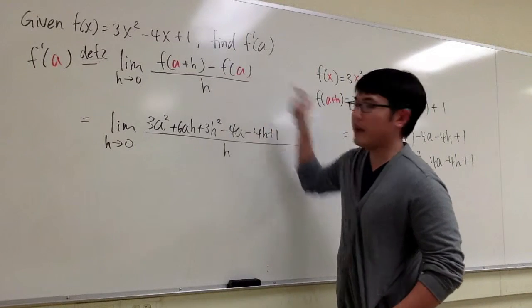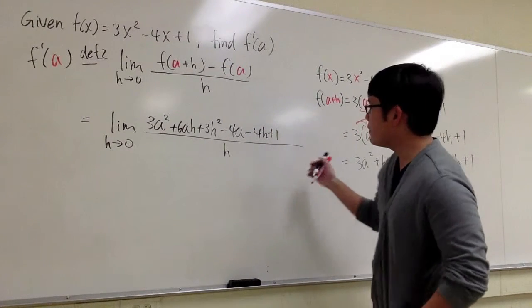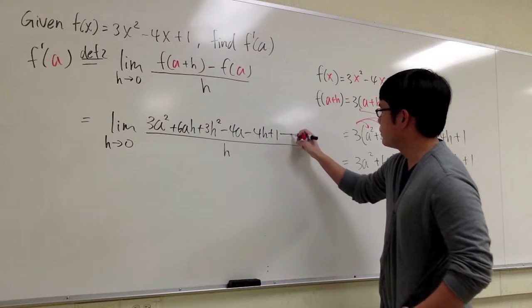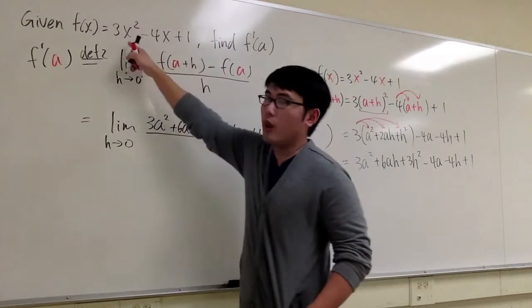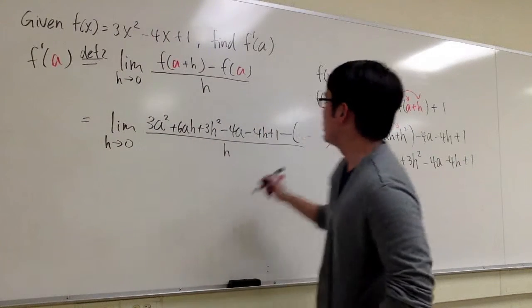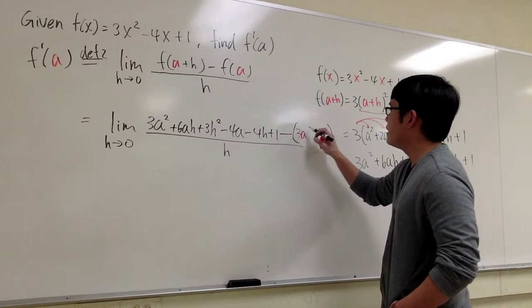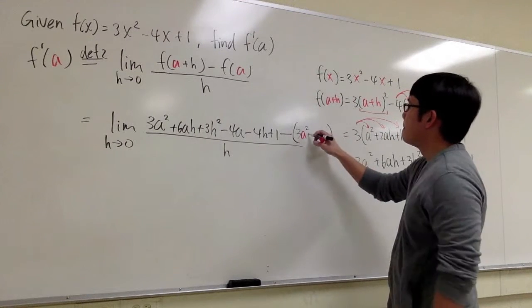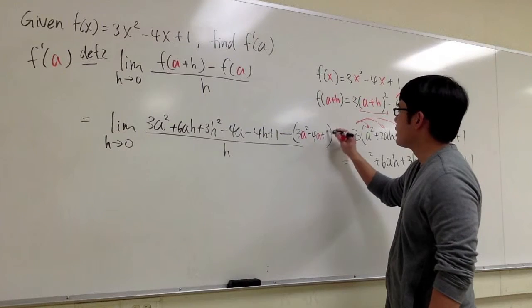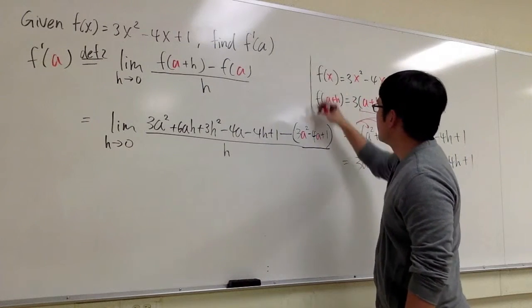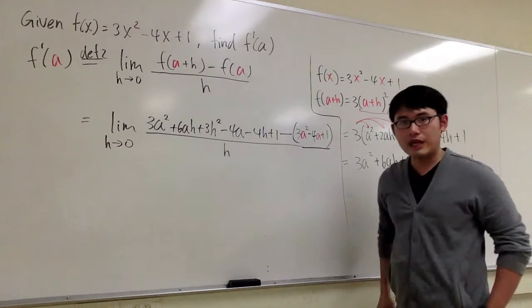We have to minus f(a). Well, to get f(a), we just need to, let me write down, minus. I just need to plug in a into all the x's in the original function right here, so I end up with 3a² - 4a, and we have + 1, and that's the expression that we have at the moment.